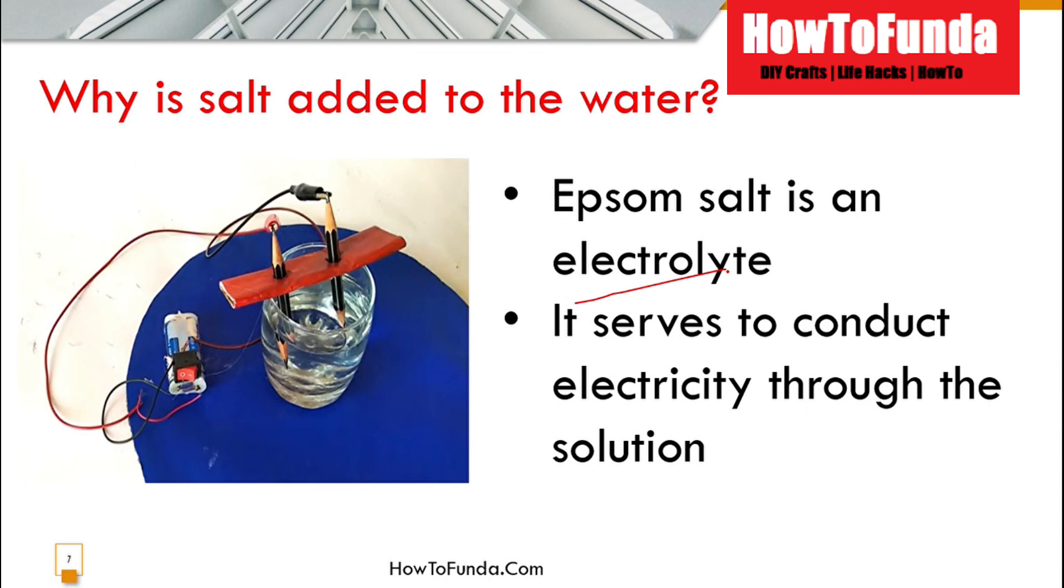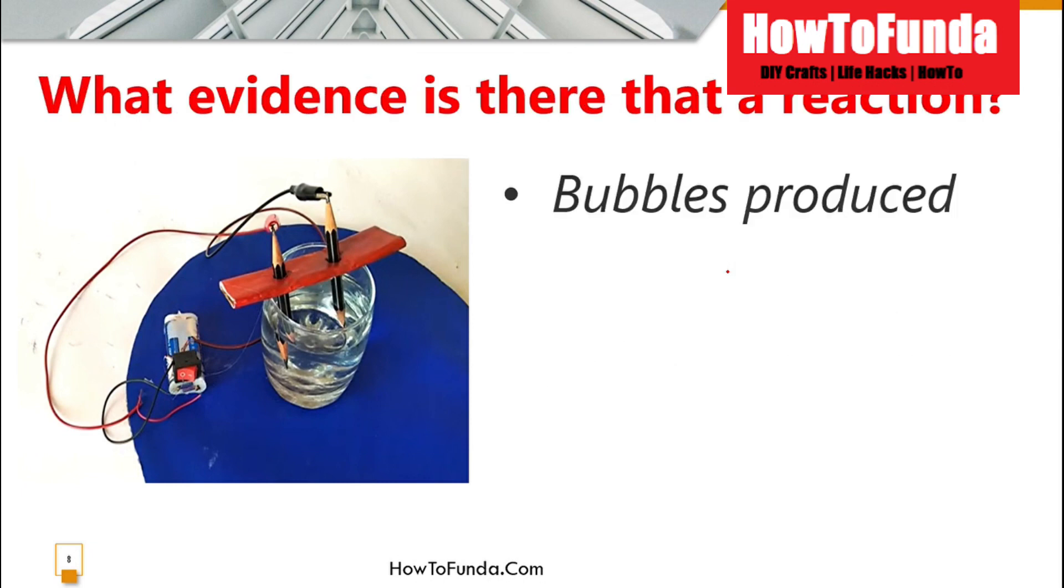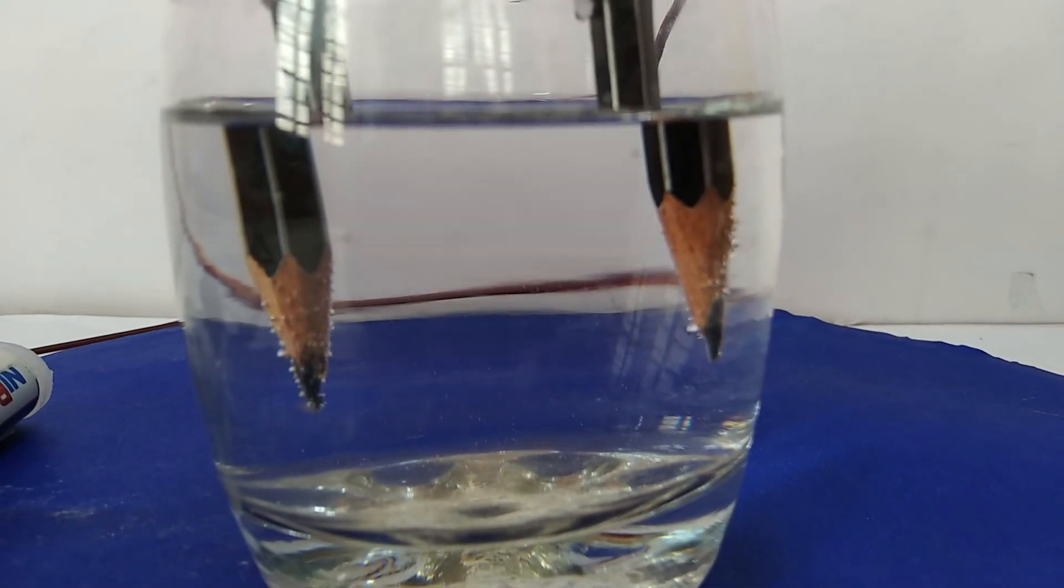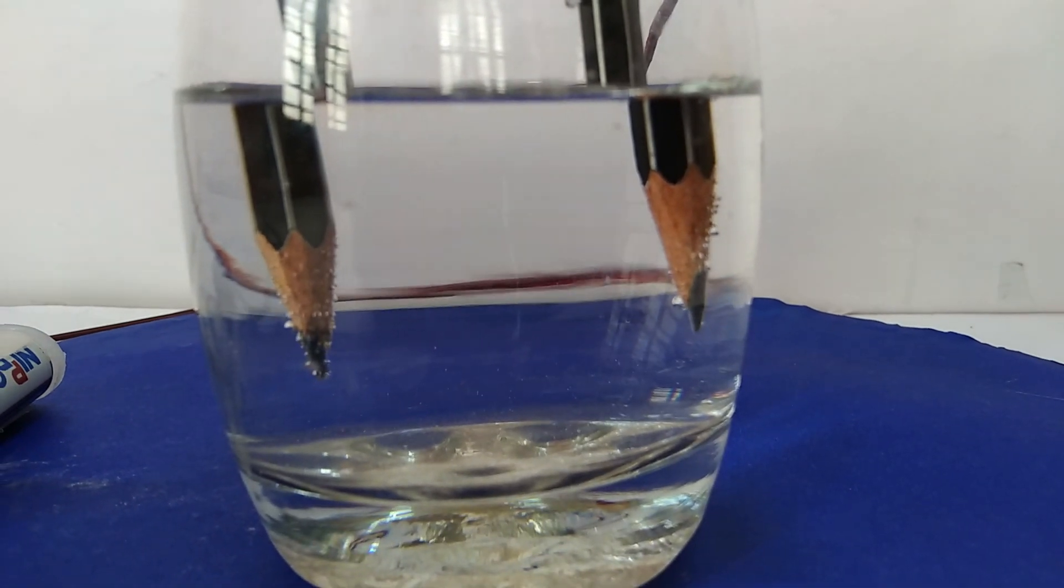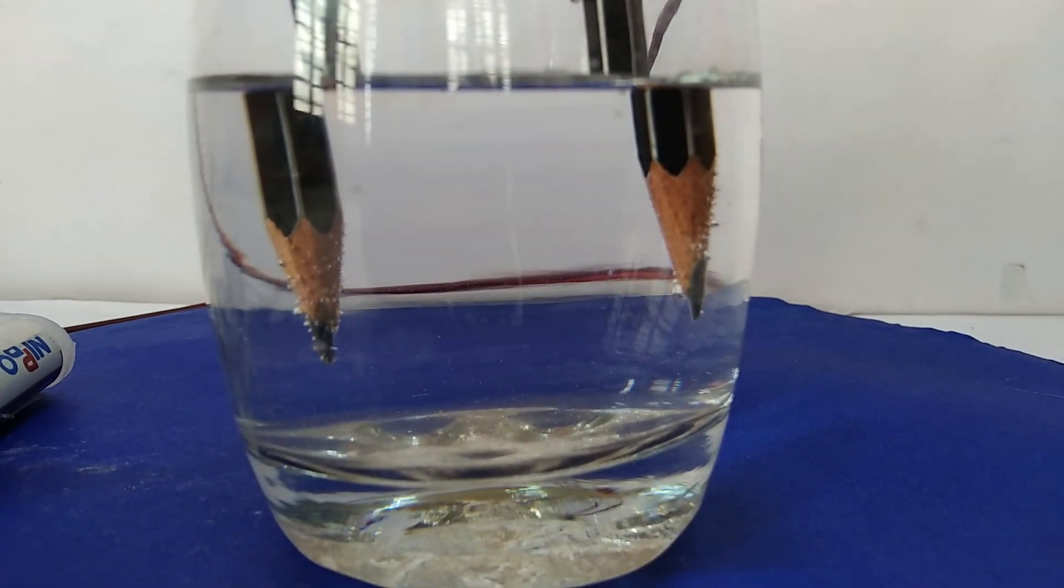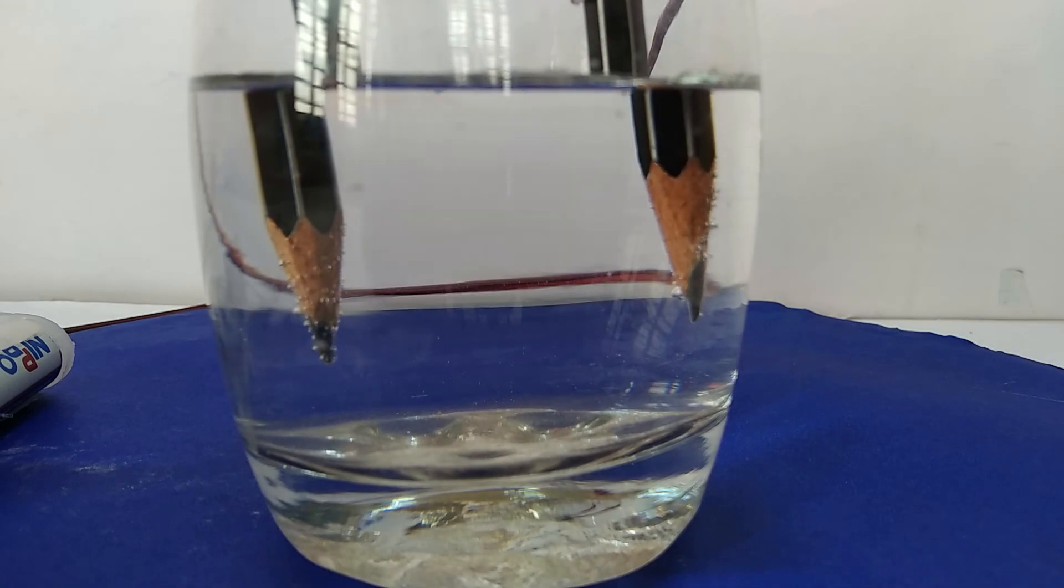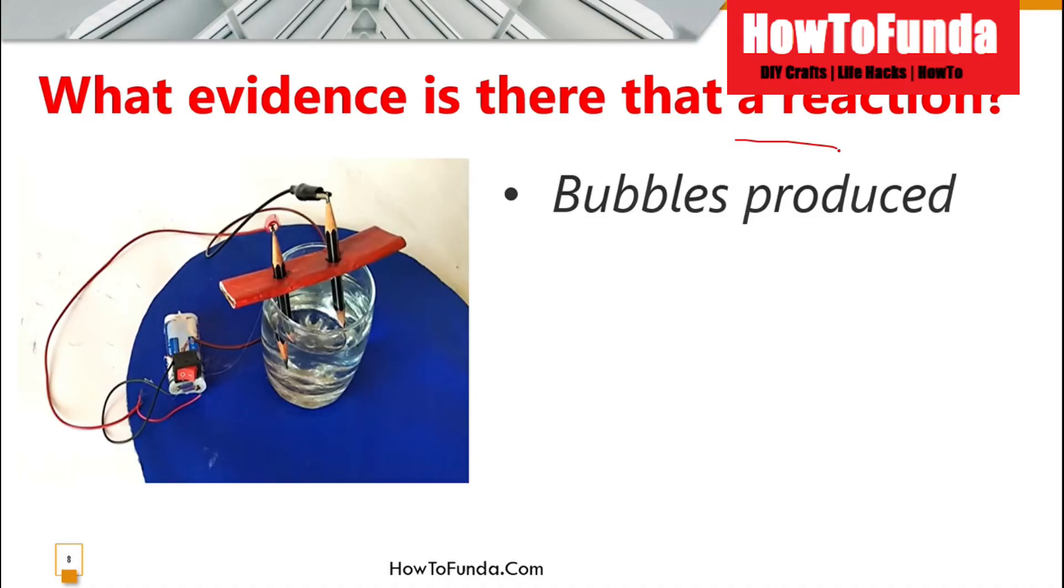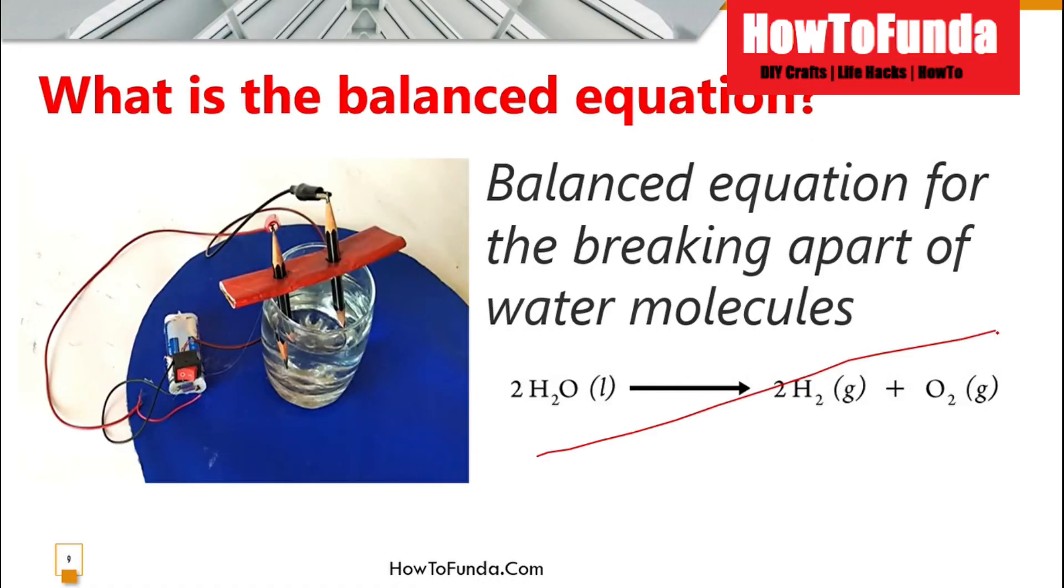How can we guarantee that electrolysis is happening? When electrolysis is happening, we will see bubbles in both electrodes. That guarantees the experiment is successful. What is the balanced equation? 2H2O splits into 2H2 plus O2. That is the balanced equation for this experiment.